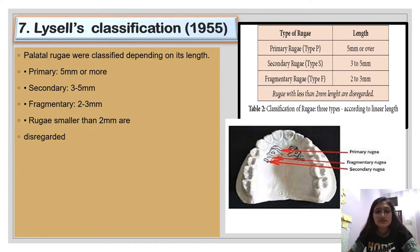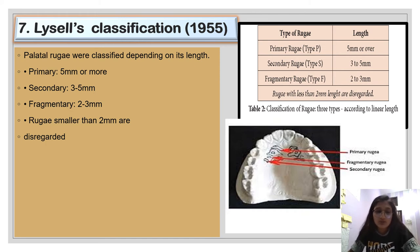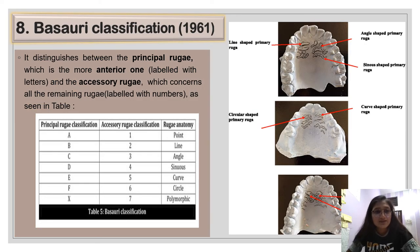The seventh classification is Lysell's classification in 1955. It is a very simple classification because Lysell classified palatal rugae depending on their length only. Primary rugae are 5 mm or more. Secondary rugae are 3 to 5 mm. Fragmentary rugae are 2 to 3 mm. Rugae smaller than 2 mm were disregarded.